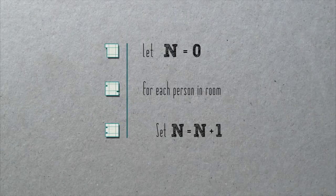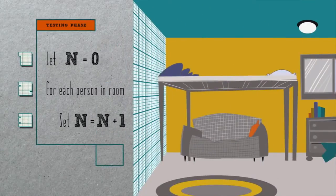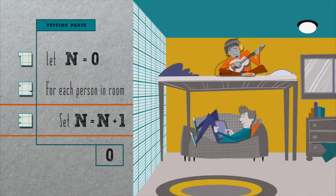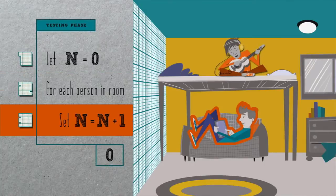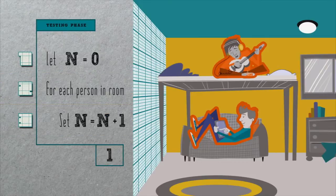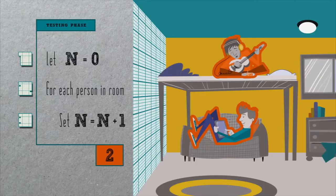Now, is this algorithm correct? Well, let's bang on it a bit. Does it work if there are two people in the room? Let's see. In line one, we initialize n to zero. For each of these two people, we then increment n by one. So on the first trip through the loop, we update n from zero to one. On the second trip through that same loop, we update n from one to two. And so, by this algorithm's end, n is two, which indeed matches the number of people in the room. So far, so good.